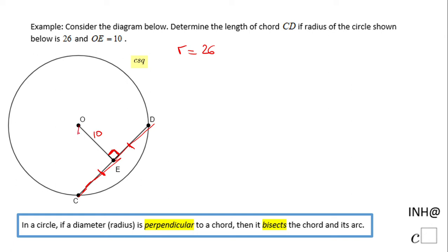Now we have a right triangle, triangle OEC. Looking at that right triangle, we know the hypotenuse is 26 (the radius), we know OE is a leg, and we need to find the other leg EC. For that reason I'm going to use the Pythagorean theorem.